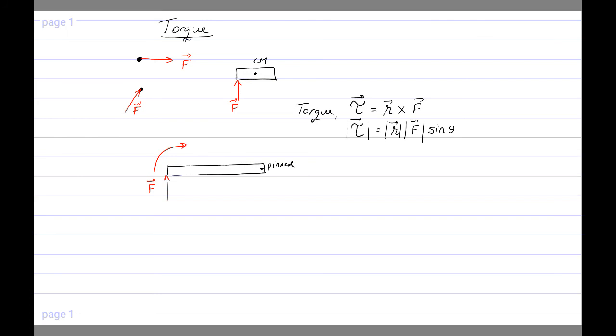So we call this distance R the lever arm. The lever arm is a distance from where the force acts to the axis of rotation. If we had that force acting at an angle, so here is the same object again and we are, let's say, pulling on it in this direction with a force F.